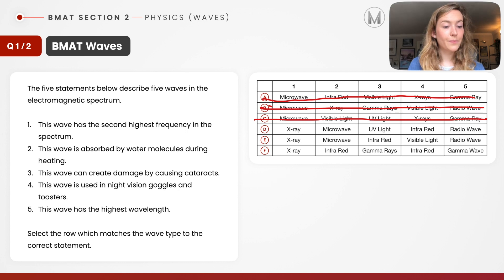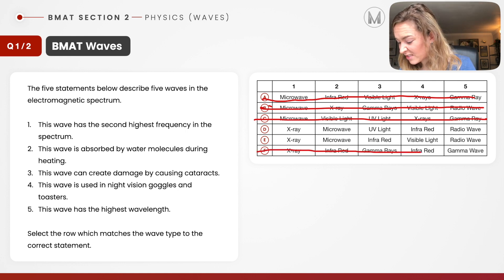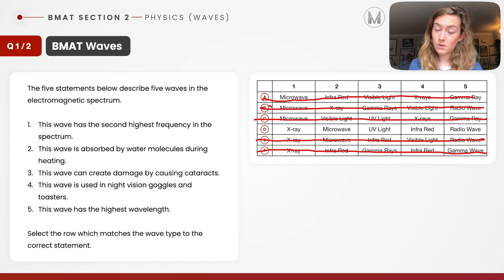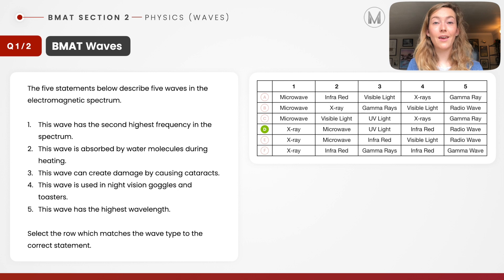Let's go to our next one. This wave is absorbed by water molecules during heating. Think back, and thinking it is microwaves. So that allows me to eliminate F because that suggested infrared, which is incorrect. To our third column, this wave can create damage by causing cataracts. That's an eye condition. Which wavelength causes problems with our eyes? If I think back, it is UV light. Eliminating E, which suggests infrared, which is not correct, I can see that D is my correct answer here.